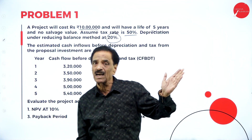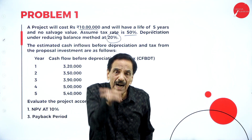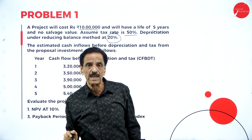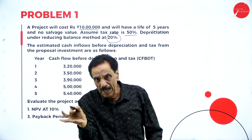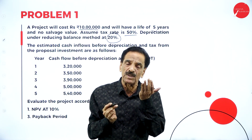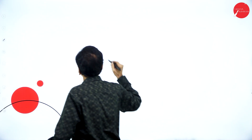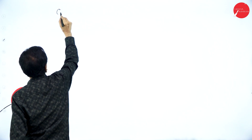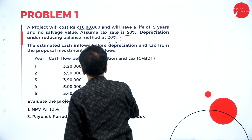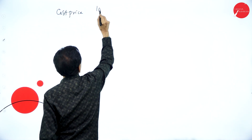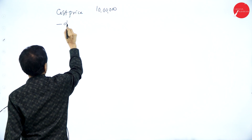You have to calculate the cash inflow. The formula is: cash inflow before depreciation and taxation, minus depreciation, minus taxation — that gives profit after tax — then add back depreciation to get the net cash inflow. The cost of the project is 10 lakh, and we will apply reducing balance depreciation.